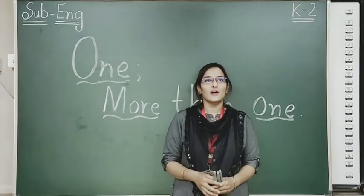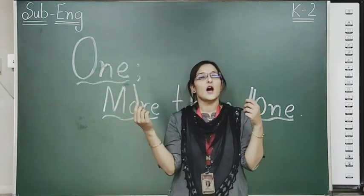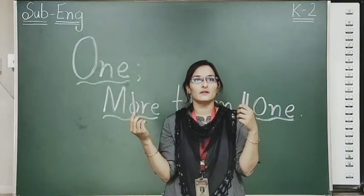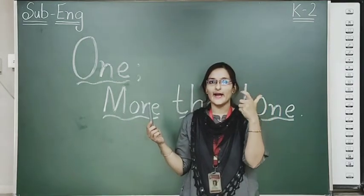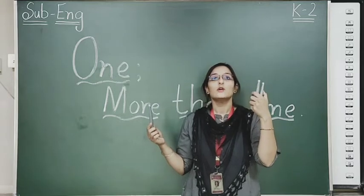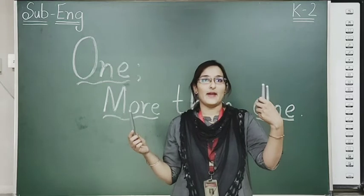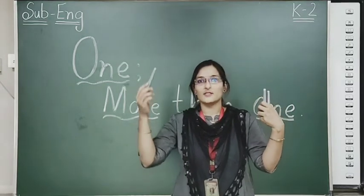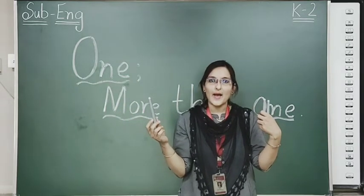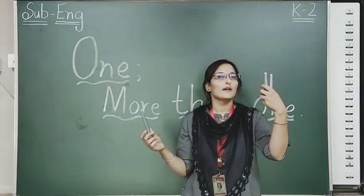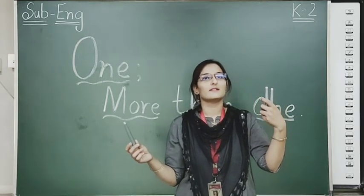Now kids, we will learn through examples. Look here. In this hand, how many pens are there? Only one. And in this hand, how many pens are there? One, two. So in this, we are talking about more than one pen. Then the spelling will change. Now we will repeat the spelling of pens. P-E-N, pen. So we will add S in it: P-E-N-S. Pens. Got it?